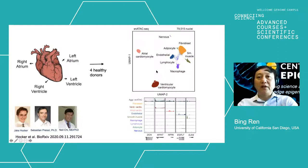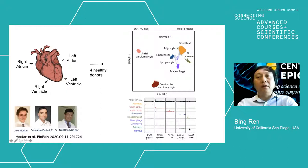Using an in-house software pipeline called SnapATAC, we managed to cluster these 80,000 nuclei into roughly 10 cell types that are known to make up the human heart. This includes atrial and ventricular cardiomyocyte — one of the dominant populations — as well as fibroblast, smooth muscles, endothelial cells, lymphocytes, adipocyte, and some nerve cells. We know what they are based upon the marker gene profiles from different cell types.